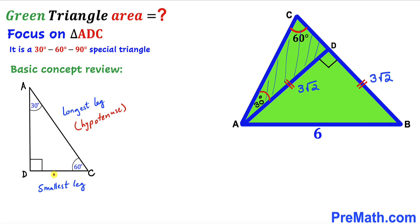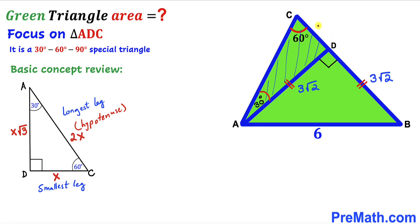In general, if the smallest leg is x, the hypotenuse is 2x and the third leg is x√3. Returning to our problem, CD is the smallest leg labeled x, AC is the hypotenuse equal to 2x, and the third leg AD equals x√3.